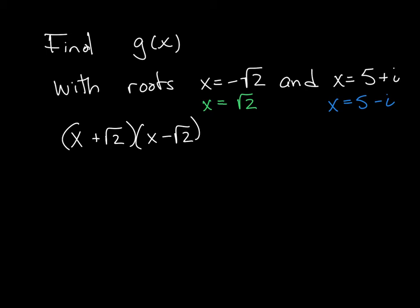That becomes x squared. And again, this is a difference of two squares, right? So that becomes x squared minus the square root of 2 squared, or just x squared minus 2. And that will be my first factor here.